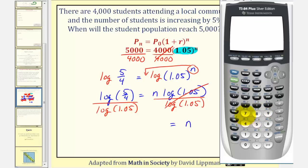So we have log(5/4), or 5 divided by 4, close parenthesis, divided by log(1.05), close parenthesis, and enter. If we round to two decimal places, or the hundredths place value, we can say n is approximately 4.57 years.